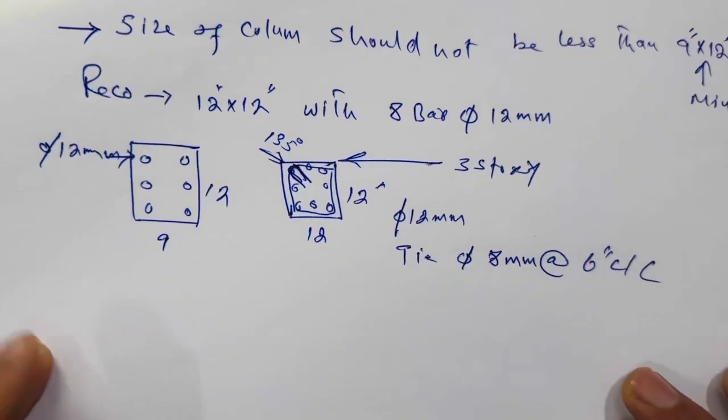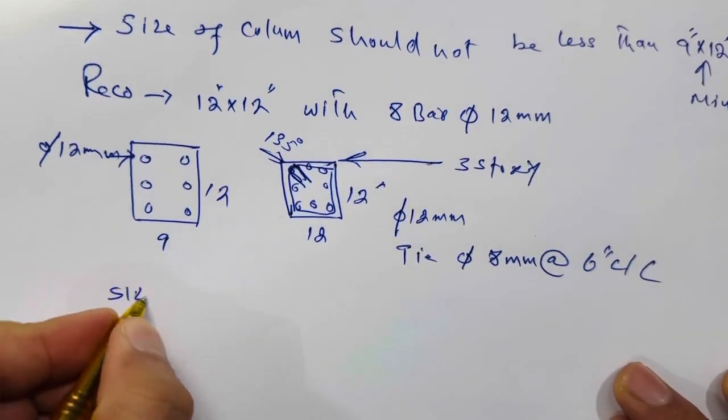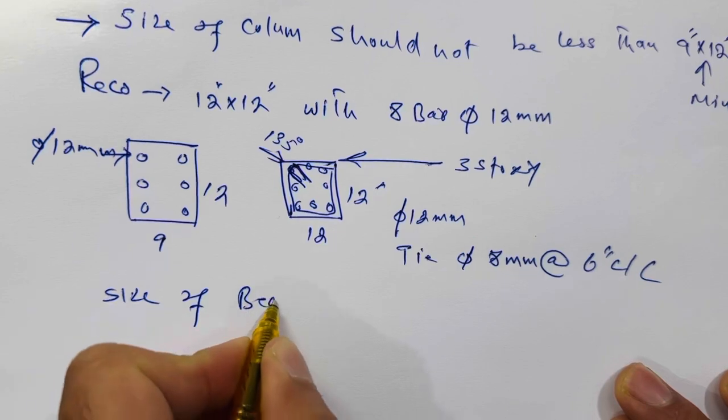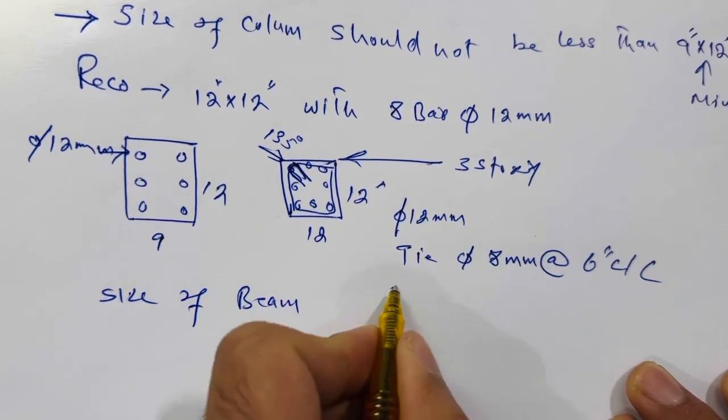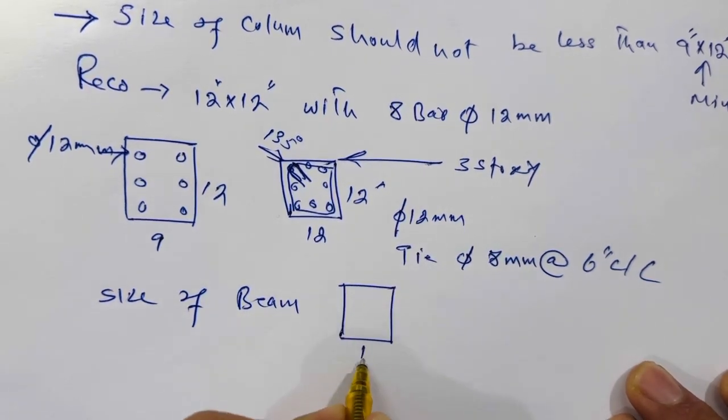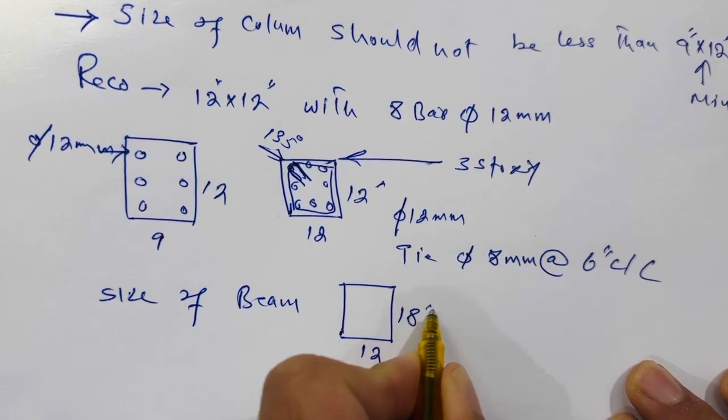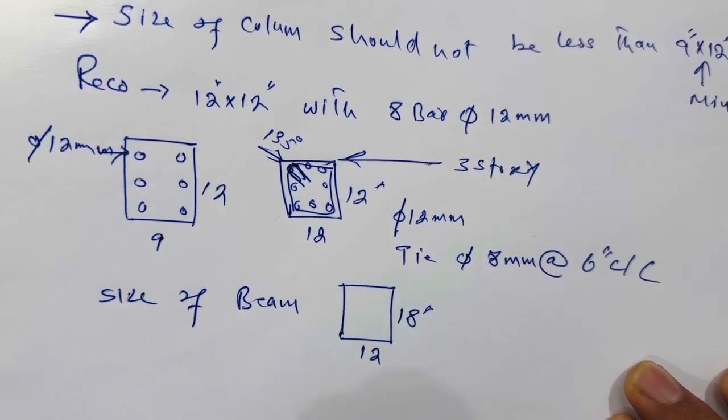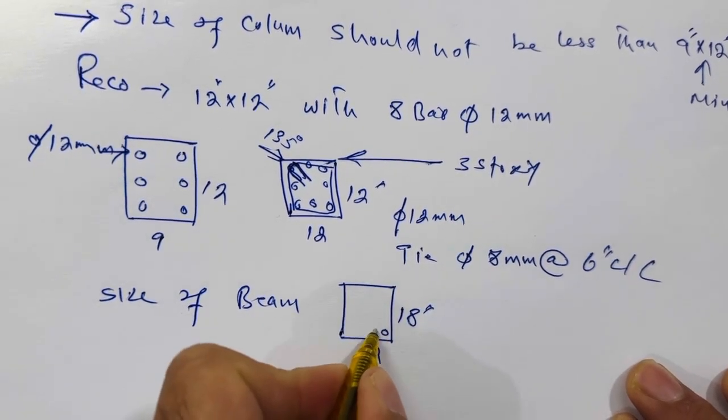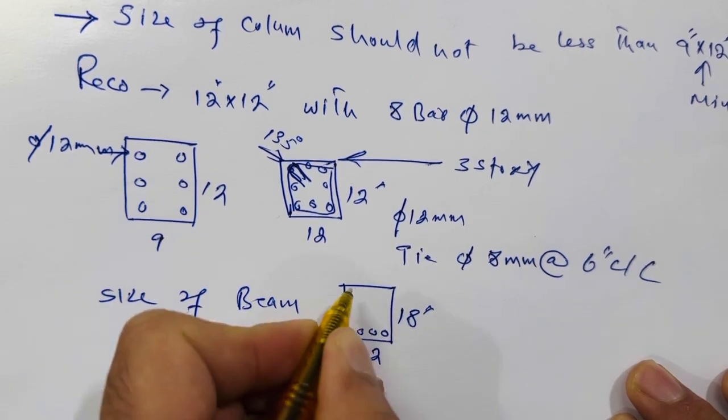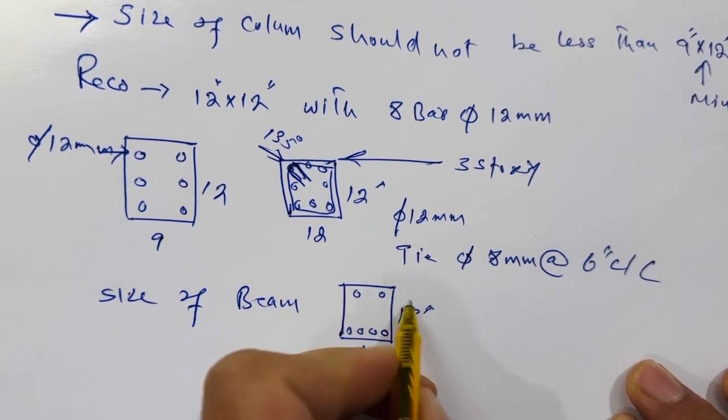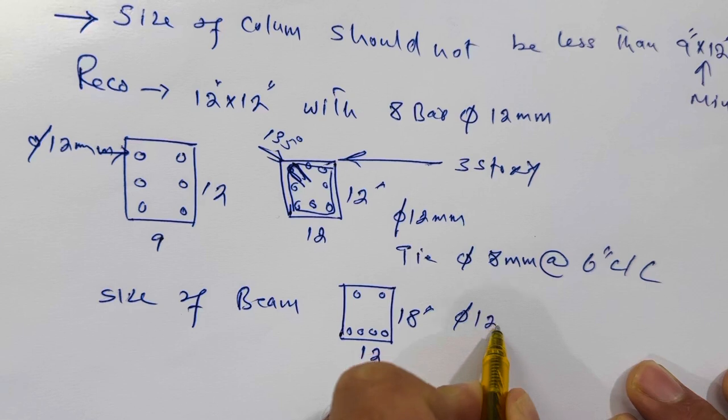Next, let me guide you for size of beam. Size of beam should be 12 inches by 18 inches, not less than this, with six numbers of steel rods - four at the bottom and two at the top - and the diameter should be 12 millimeter.